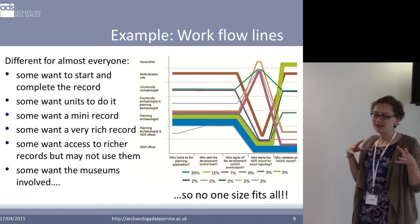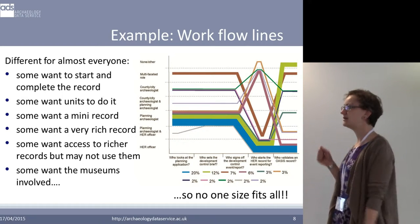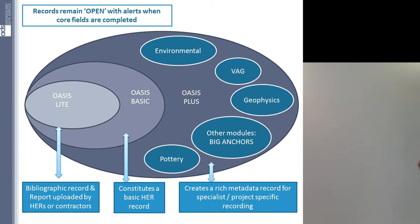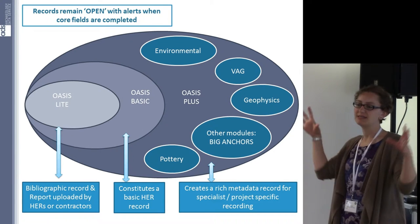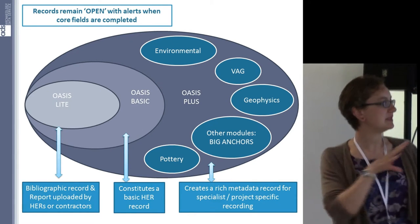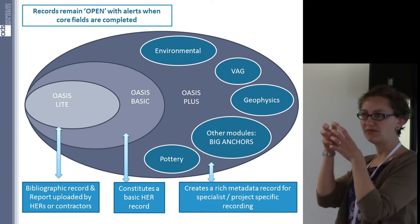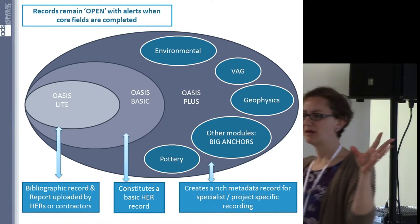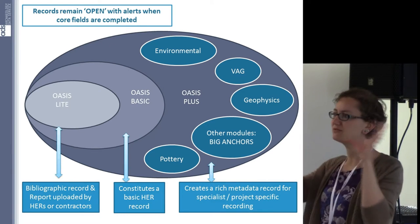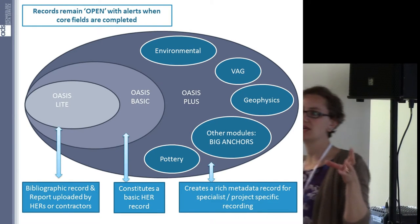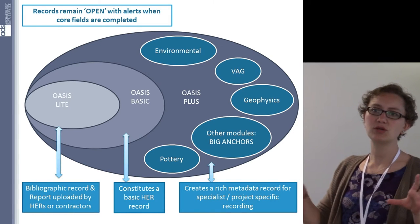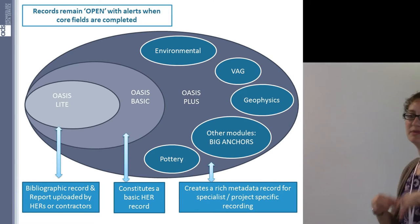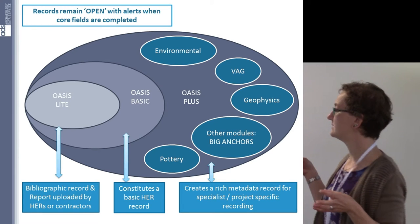Different people want to start records, different people want big records or little records — they want big records but aren't sure they'll use them, yet they still want somebody to collect that data. So a new OASIS system would collect data at different levels. There's OASIS Lite, a very brief record — essentially a bibliographic record with a bit more information. There's OASIS Basic, or hopefully OASIS Standard, which would constitute a basic HERs record, more similar to the current OASIS record. And then OASIS Plus, which records lots of extra event-specific information — radiocarbon dates, environmental information, and the geophysics module which currently exists in OASIS would fit into that.